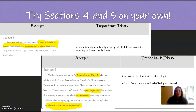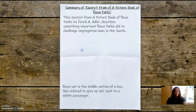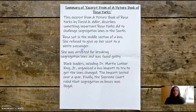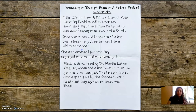I'm going to take a look and see what ideas I had. African Americans in Montgomery protested Rosa's arrest by refusing to ride on public buses. The bus boycott was led by Martin Luther King Jr. African Americans were tired of being oppressed. Black leaders, including Dr. Martin Luther King Jr., organized a bus boycott to try to get the laws changed. The boycott lasted over a year. Finally, the Supreme Court ruled that segregation on buses was illegal. I use 'finally' as a transition — it lets readers know I'm transitioning into the final part of something. It's important to use transitions and keep everything concise.